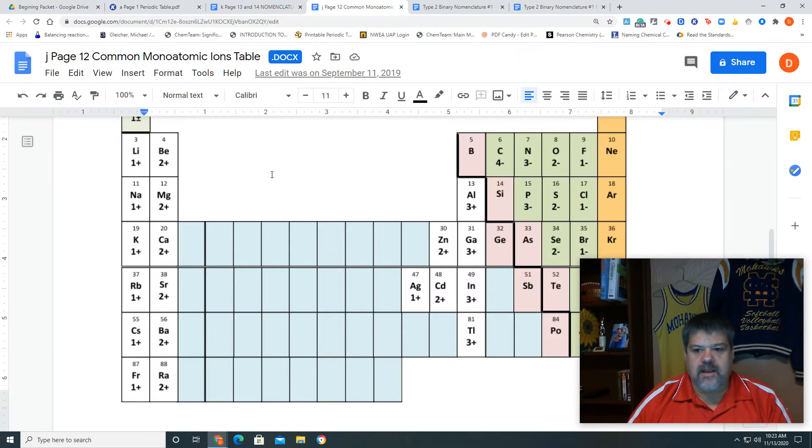So let's go to our handy-dandy sheet right here, and on this sheet right here, we find that sulfur, and sulfur is S, and it's right here, it's a negative 2.